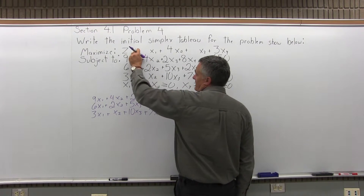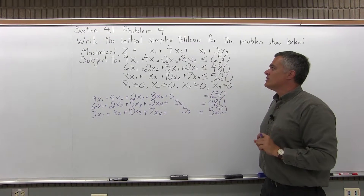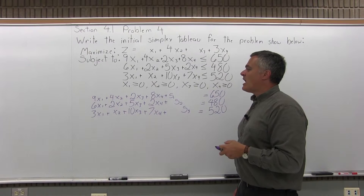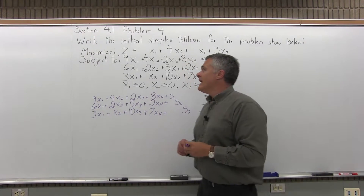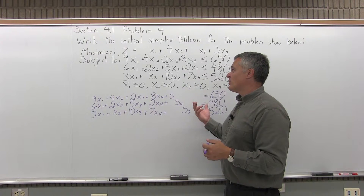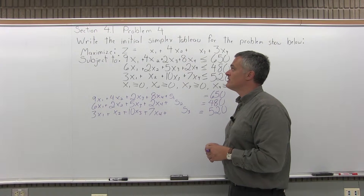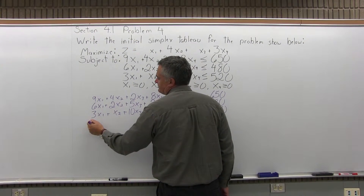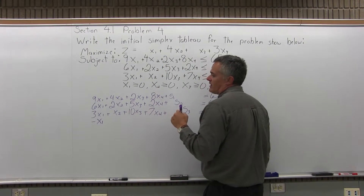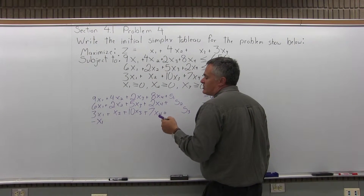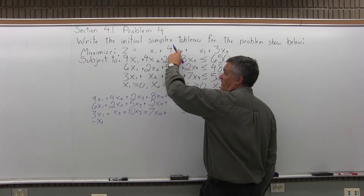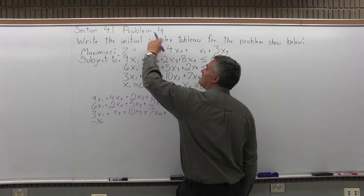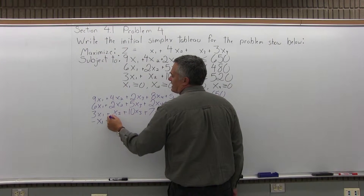The objective function is already an equation, so no slack variable is needed, but the variables must be rearranged to line up with the other equations. The x1 term is on the right-hand side of the equal sign, so it moves to the left side as negative x1. The 4x2 is also on the right side, so it becomes negative 4x2 on the left side.